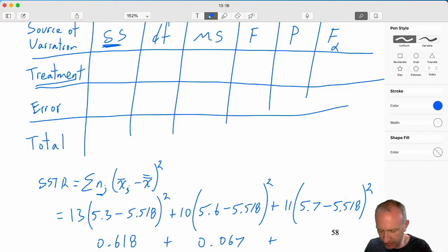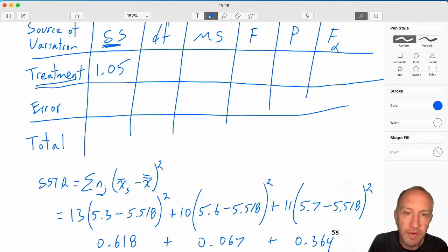And 5.7 minus 5.518 squared times 11. It's so easy to make silly mistakes. I'm making them all over the place. Times 11, and here we have 0.364, now we'll add those together, and I have 1.05. Finally, 1.05.